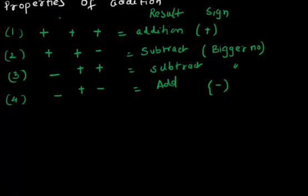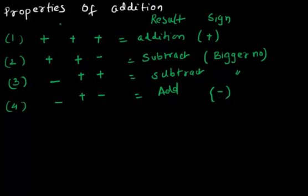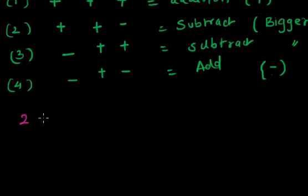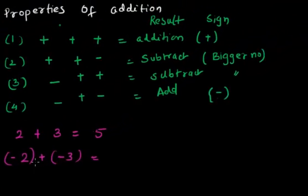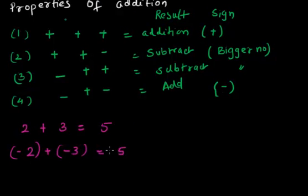This will be more clear with examples. Suppose we have 2 plus 3, both being positive — we add them: 5, and the sign is positive. In case we have minus 2 plus minus 3, two negative numbers — it results in addition: 2 plus 3 is 5, but both being negative, the answer will be negative 5.